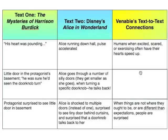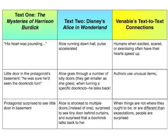We've made a really solid connection there. So again, we see this little door in the protagonist's basement — he's surprised to see it there; he obviously didn't build it or buy the house that way. In the same way, Alice goes through a number of doors and she's surprised when the doorknob talks back. So let's talk about how authors use unusual things — like different sized items — to show supernatural events.